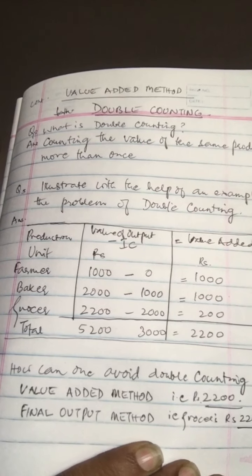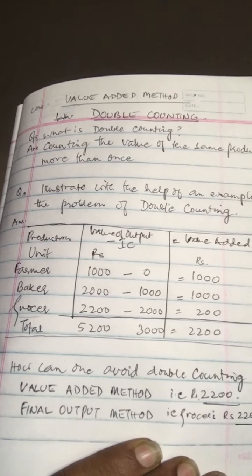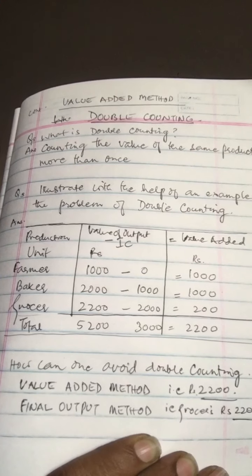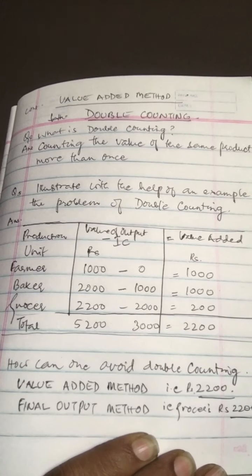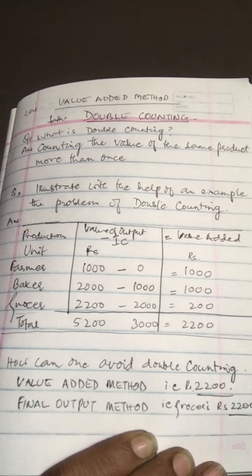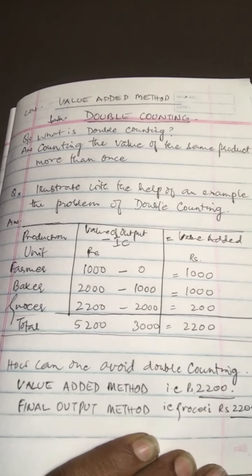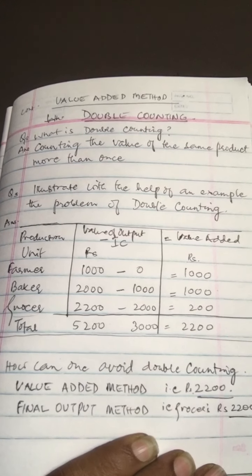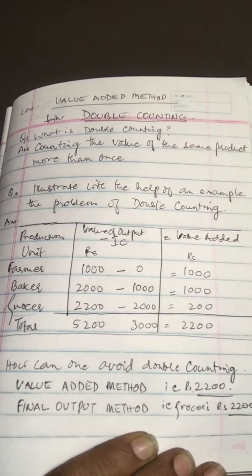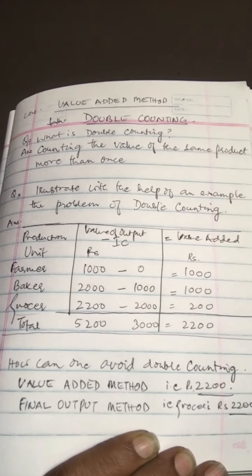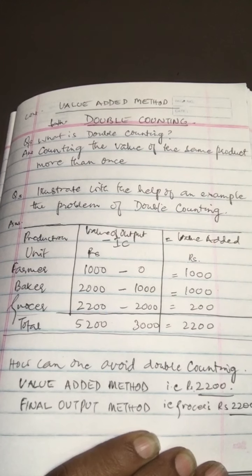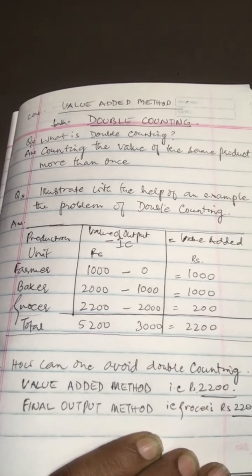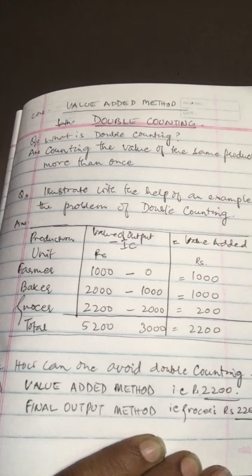This precaution of double counting has to be taken into account while measuring national income with the value added method. In this method, there's a possibility that the output of a good or service may be counted more than once, and this may lead to overestimation of national income — this is referred to as the problem of double counting.